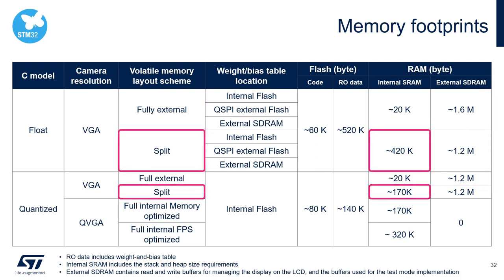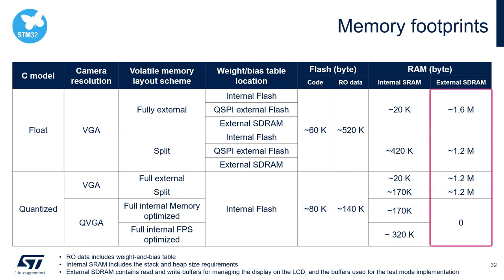In the split case, it saved 250 kilobytes in the internal SRAM. For both models, in VGA resolution, the external SD RAM takes a lot of memory because it is used for the camera buffers. However, it is zero for the quantized model in the QVGA solution because all the buffers are overlaid, meaning a unique physical memory space in the internal SRAM is used for all the buffers.